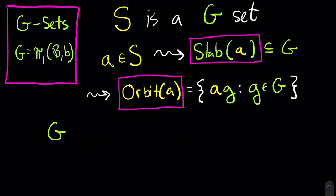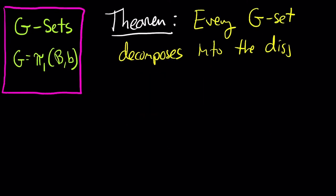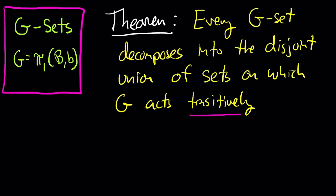There's one more piece of terminology: what it means for G to act transitively. This is the same as saying that the entire set S consists of one orbit. More generally, the orbits of S partition the set S, which proves this theorem that every G-set decomposes into the disjoint union of sets on which G acts transitively.